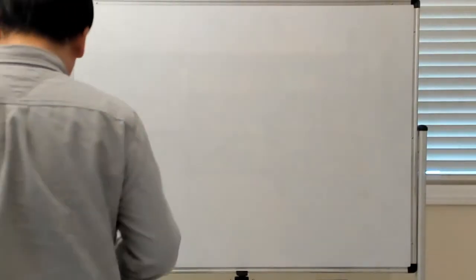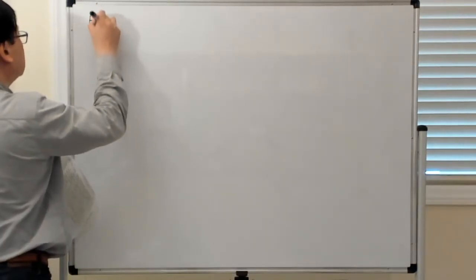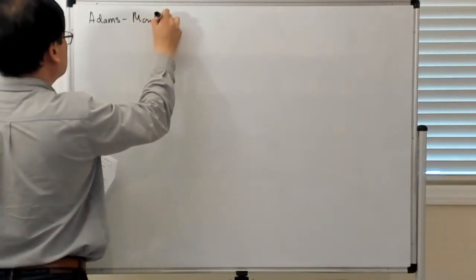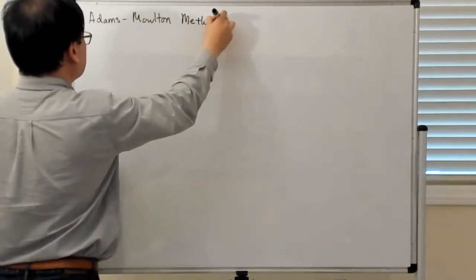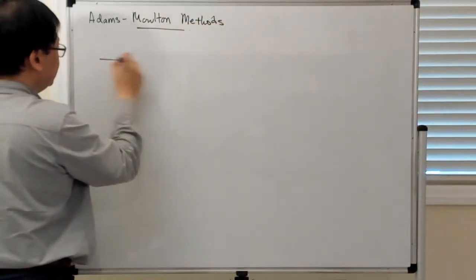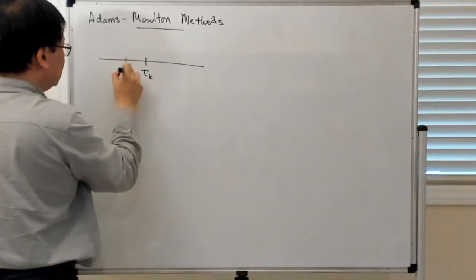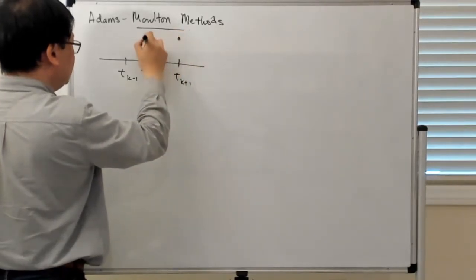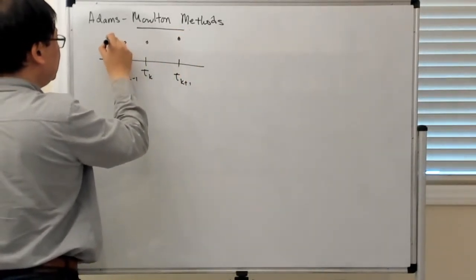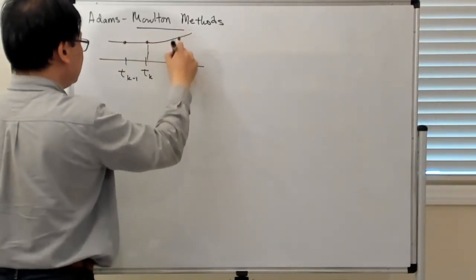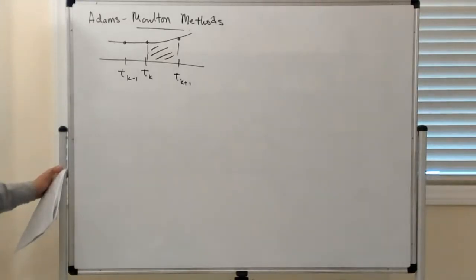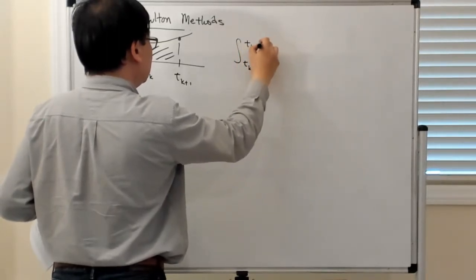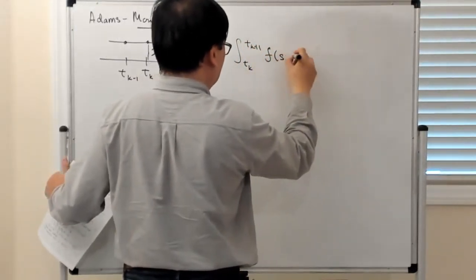Now we're going to talk about the Adams-Moulton methods. The basic idea behind the Adams-Moulton methods is that you have the solutions at the previous time, but you also sort of pretend as if you know the solution at the new time which you're actually trying to compute, and you fit a polynomial to that, and then you use that polynomial to approximate the integral from tk to tk+1 of f along the solution.